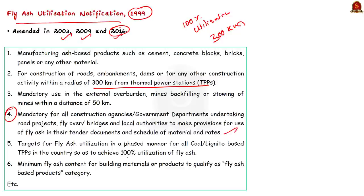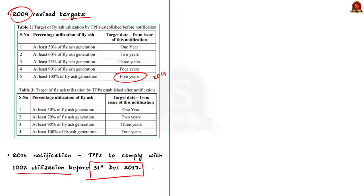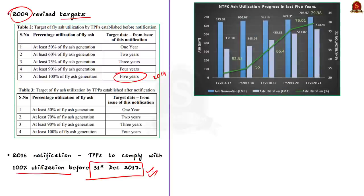Most importantly, the notification prescribed targets for fly ash utilization in a phased manner for all coal and lignite based thermal power plants. The revised targets introduced in the 2009 notification mandated that existing thermal power plants should achieve 100% utilization within five years, that is within 2014. By the 2016 notification, thermal power plants were mandated to comply with 100% utilization of fly ash generated by them before 31st December 2017. But as per government data, this has not been achieved. Even in the power plants managed by NTPC, under the direct administrative control of Ministry of Power, the fly ash utilization has grown but has not reached 100% yet. Due to the notification, utilization has increased to 80% over the last five years.